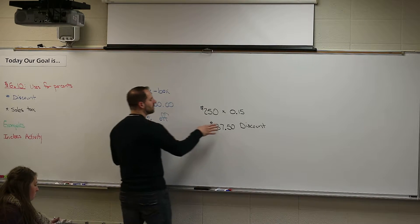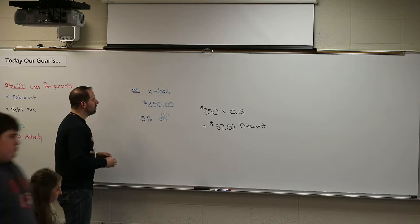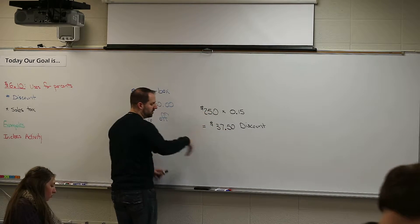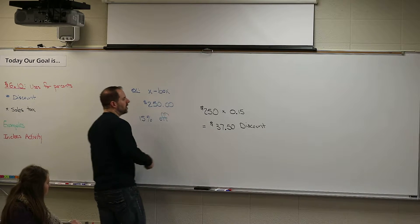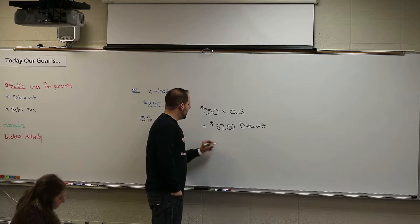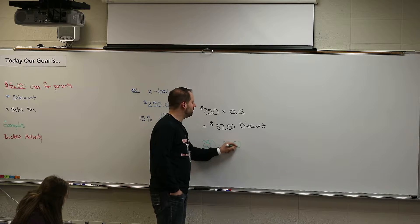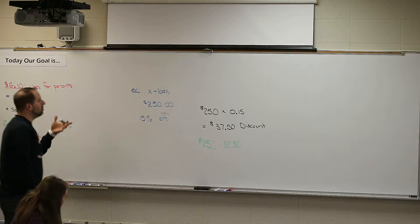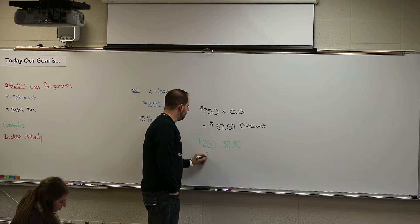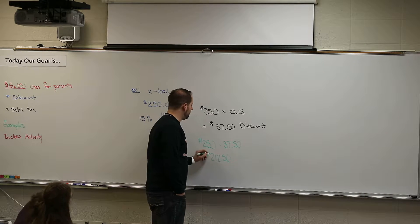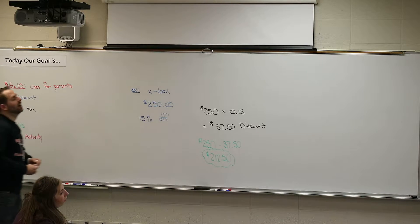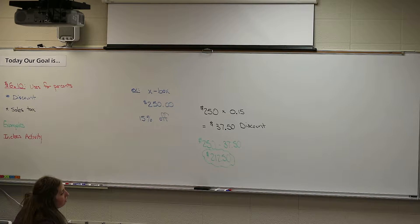$37.50. All right, we're getting $37.50 off - that is our discount, that is not what we're going to pay for the Xbox. This is the money that's coming off of it. So whatever percent the advertisement tells you, you multiply - that's the price coming off your total. So you'll have to do a little math: take the $250 and subtract the $37.50. The final price of that item is $212.50.